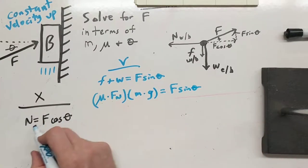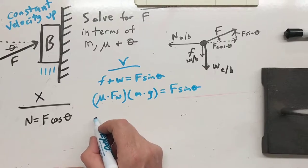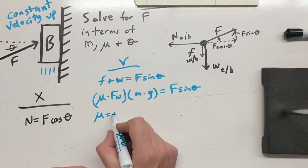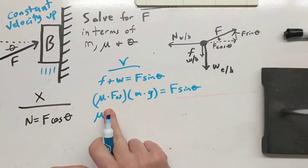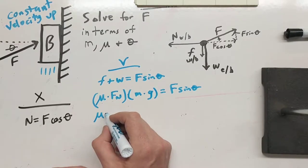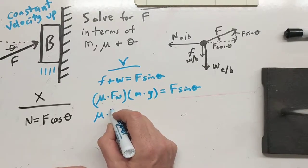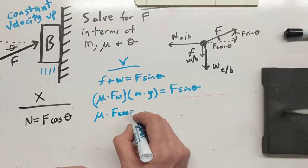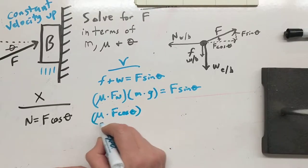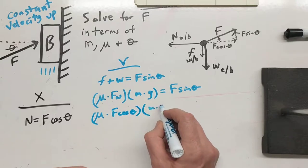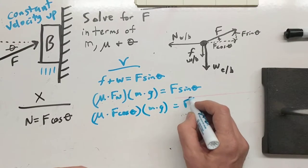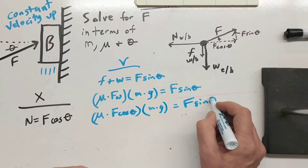Now we know the normal force we just solved for here. So we can say mu times F cosine theta plus mg equals F sine theta.